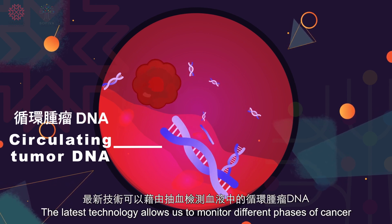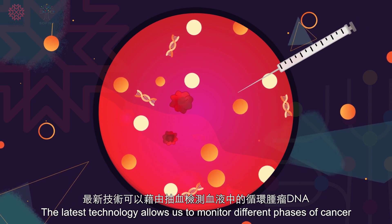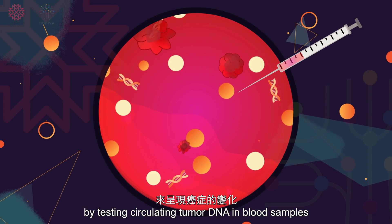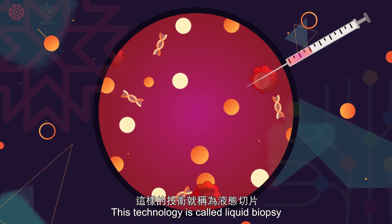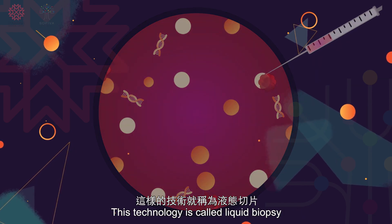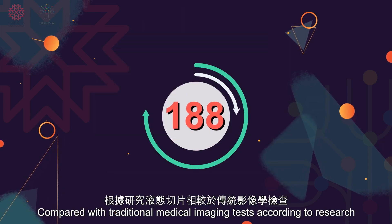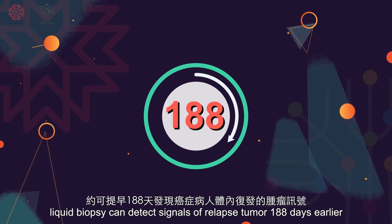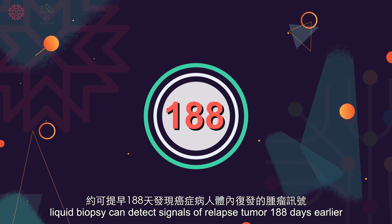ctDNA, the latest technology, allows us to monitor different phases of cancer by testing circulating tumor DNA in blood samples. This technology is called liquid biopsy. Compared with traditional medical imaging tests, according to research, liquid biopsy can detect signals of relapse tumor 188 days earlier.